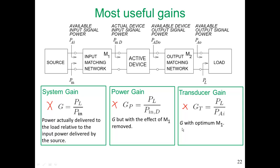GT is the gain with an optimum input matching network. The power gain GP is the gain with the effect of M1 removed. These gain definitions can be used at different stages in the design — they can be used when M1 has been designed, or in the case of GT, when the optimum M1 has been designed for input conjugate matching.